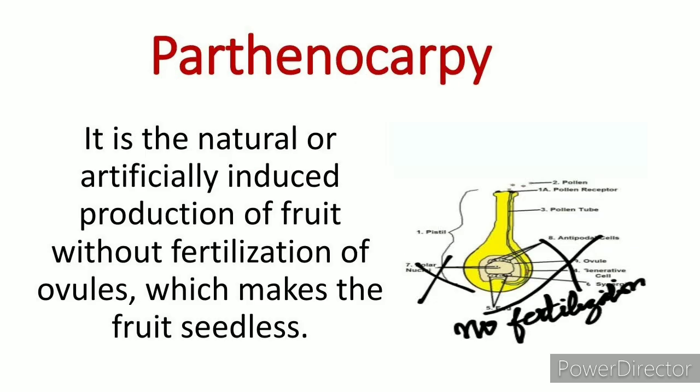Next is parthenocarpic fruit. To understand parthenocarpic fruit, we first understand parthenocarpy. Parthenocarpy is the natural or artificially induced production of fruit without fertilization of the ovule. If there is no fertilization of the ovule, the fruit will become seedless. Parthenocarpy can also be induced artificially — if hormones are applied to the flower, the fruit will become parthenocarpic.